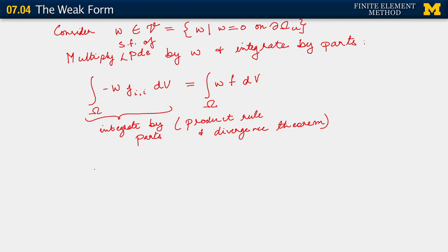The product rule tells us that we need to look at w multiplied by j_i comma i as one term. It tells us that integral over omega of minus w j_i comma i is really integral over omega of minus (w j_i) comma i, plus w comma i times j_i. If you expand out the first term in the integrand, one of the terms it produces cancels out, and we're left with what we had in the first line.